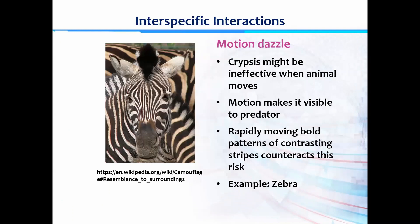Now we will study motion dazzle. In crypsis, if the animal is static and not moving, it is hard for a predator to identify the prey. But if the animal is moving, it becomes prominent to predators searching for prey. In that case, motion dazzle is helpful — even when the animal is moving, it is not very visible to its predators.